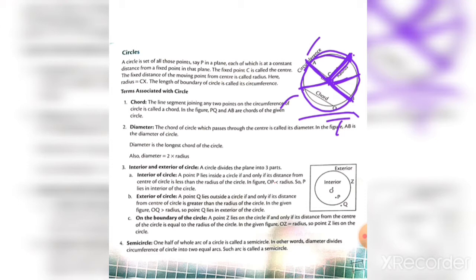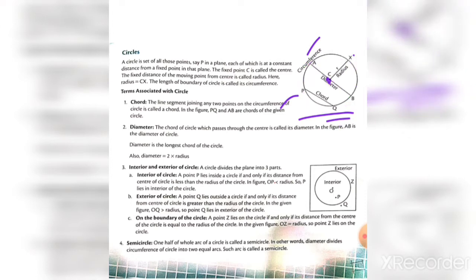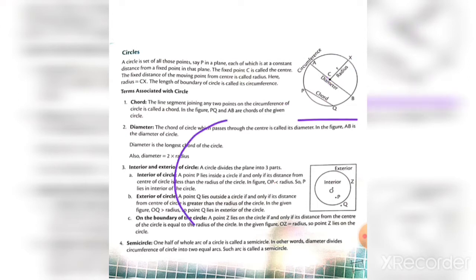One more concept we can get here is diameter. Suppose this is a circle, this is the center, and this is a radius. If you make one more radius on the other side, you will get a line segment passing through the center. This line segment is called a chord.